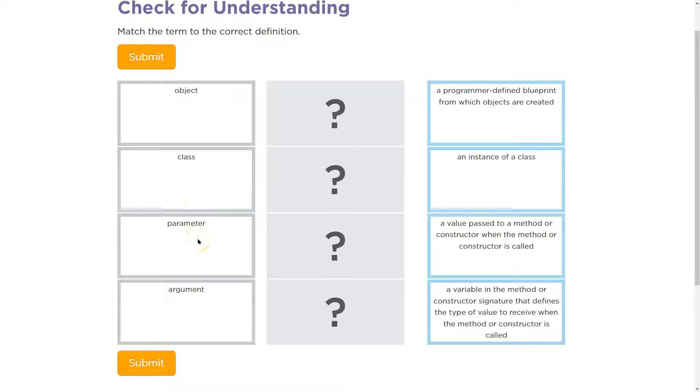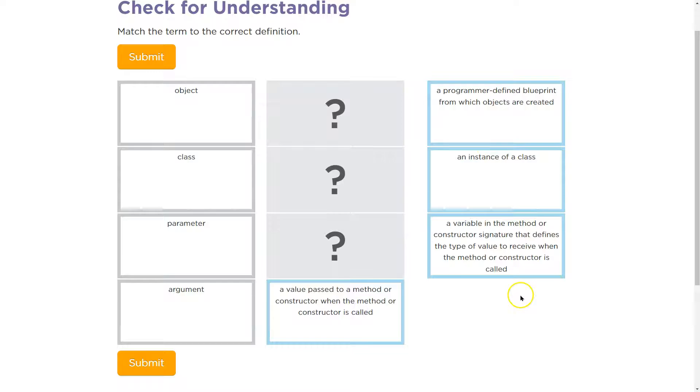Yeah, when we ask for some functionality behavior, right, so when we say paint, and then in quotes, we have blue in the parentheses, that is an argument. So, a value passed to a method, boom, done.